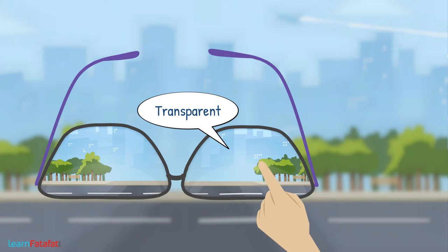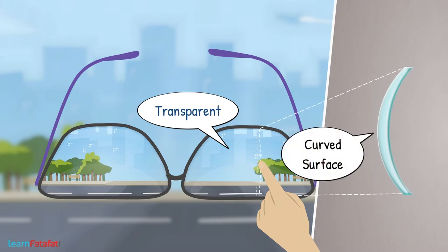अगर आपने छुआ होगा, तो आपको समझ आया होगा कि उनका surface curved होता है. The material which is transparent and have one or both surfaces curved is called lens.